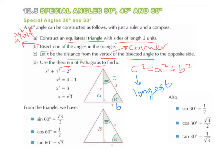For 30 degrees: sin of 30 degrees equals opposite over hypotenuse (SOH), so sin 30 equals 1 over 2. Cos of 30 degrees equals adjacent over hypotenuse (CAH), so cos 30 equals root 3 over 2. Tan of 30 degrees equals opposite over adjacent (TOA), so tan 30 equals 1 over root 3.